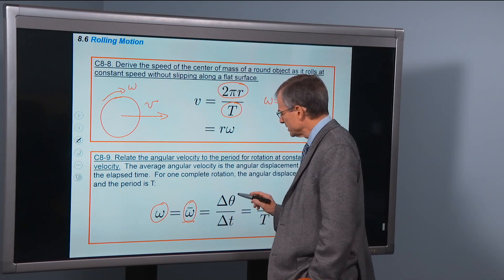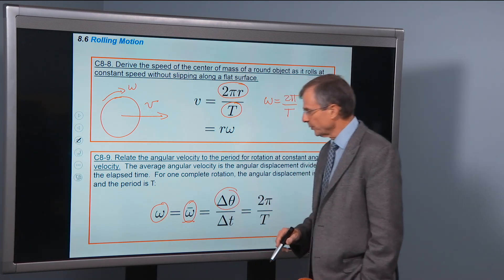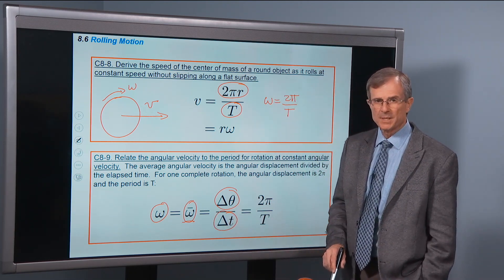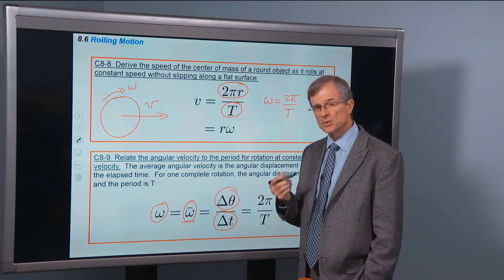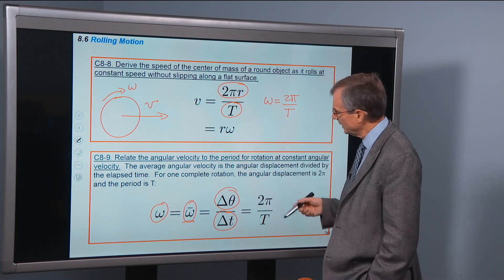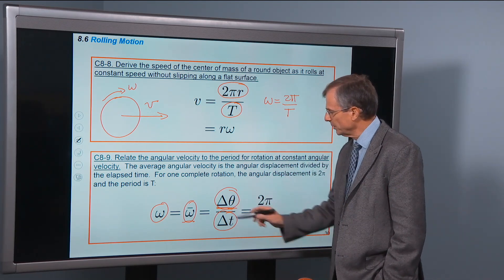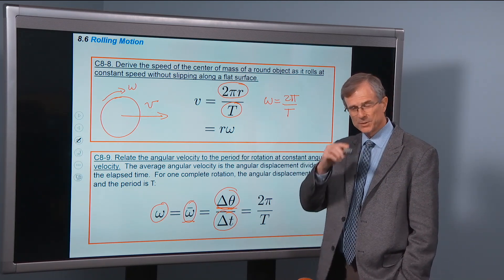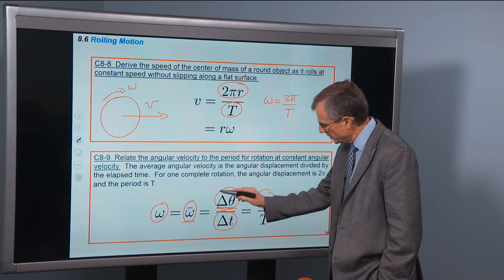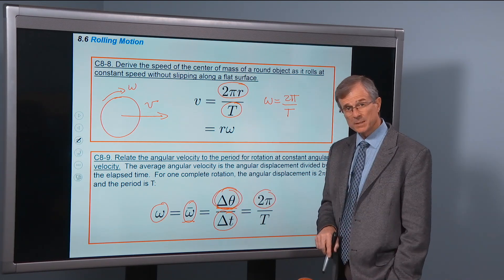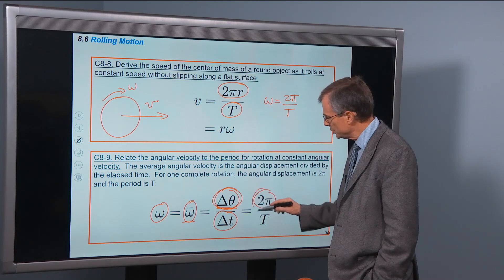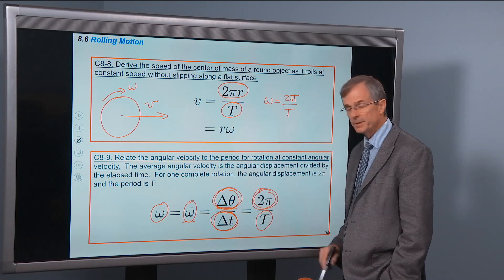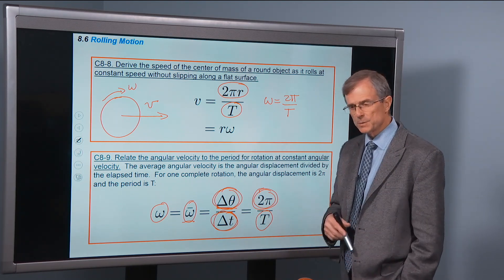Well, the average angular velocity is the angle through which you rotate divided by the elapsed time. But if you rotate through a complete circle, then the angle that you're going to rotate through, measured in radians, is 2 pi, because one complete circle is 2 pi radians. So the angular displacement is 2 pi radians, and the time it takes to rotate through a circle is the period t. And that relates us back to chapter 5.